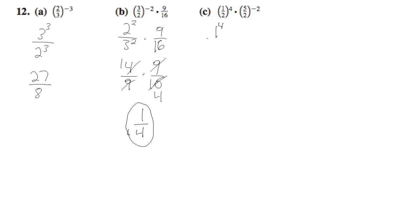Over here, we get 1 raised to the fourth over 2 raised to the fourth, times 2 raised to the second over 5 raised to the second.